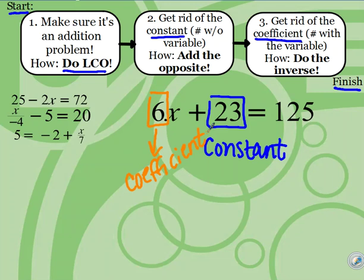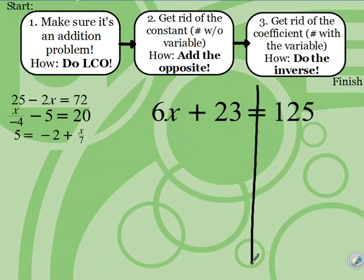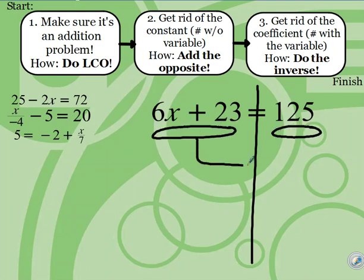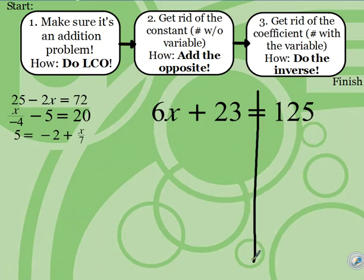We should be able to see this at the beginning of the problem as we work, and we'll keep that information in mind as we move forward. What I tell my students to do is draw a line. We have to keep things balanced — like a balance scale, you have to keep both sides equal. Whatever you do to one side, you do to the other. So we draw our line, and the first step says make sure it's an addition problem. It is, so we move to step 2.